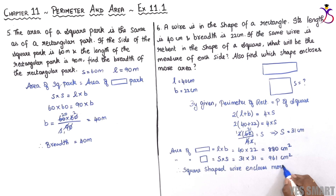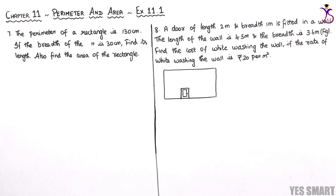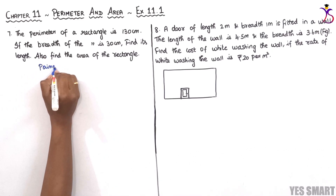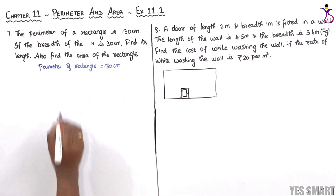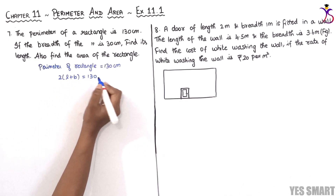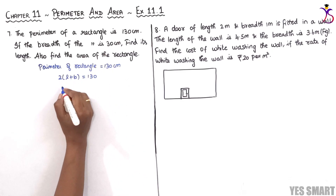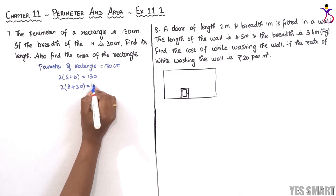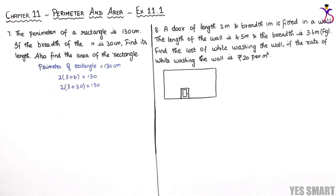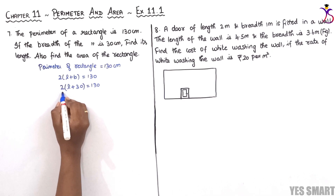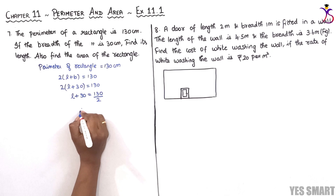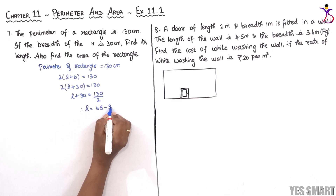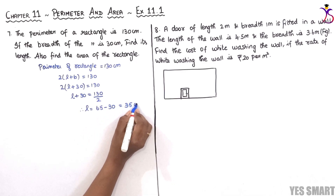Now let's discuss the seventh sum. The perimeter of a rectangle is 130 centimeters. So 2 into (L plus B) equals 130. The breadth of the rectangle is 30 centimeters, so 2 into (L plus 30) equals 130. Transposing 2: L plus 30 equals 65. Therefore length equals 65 minus 30, which equals 35 centimeters.